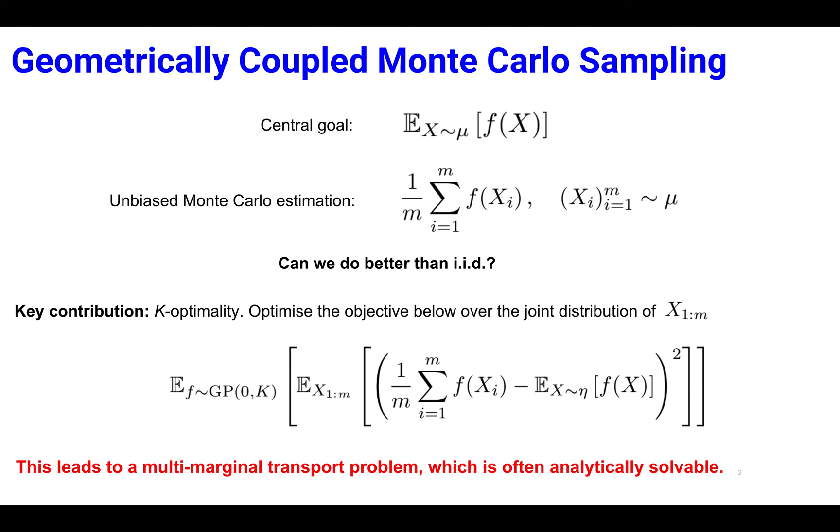Our central goal is to estimate expectations of functions of random variables x with Monte Carlo methods outperforming standard baselines. We show that optimal joint distributions of samples x_i can be derived by solving multi-marginal transport problems, often analytically tractable.